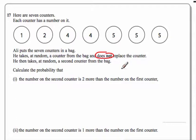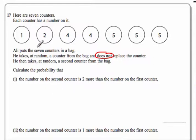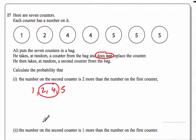He then takes at random a second counter from the bag. Calculate the probability that the number on the second counter is two more than the number on the first counter. Well, there are not very many possibilities. We've only got the numbers one, two, four and five. So the only combination that works is a two the first time and a four the second time — no other combination will work.